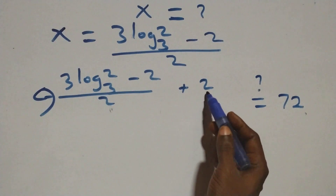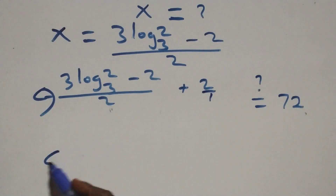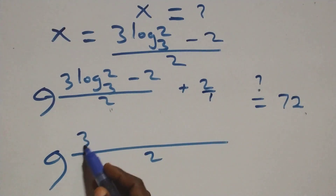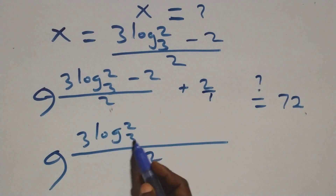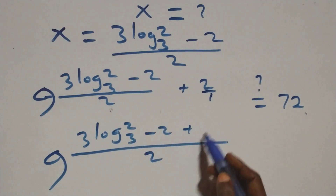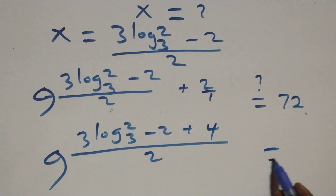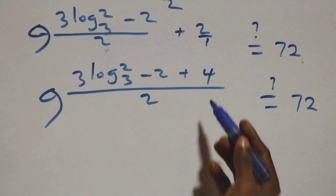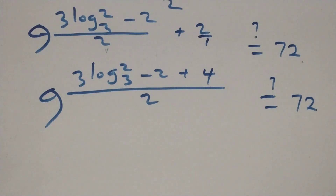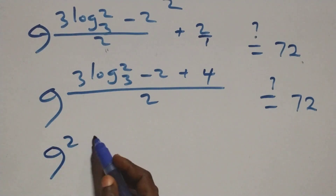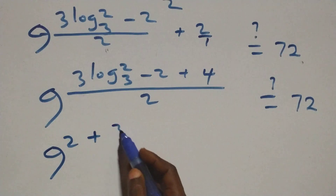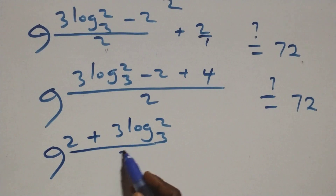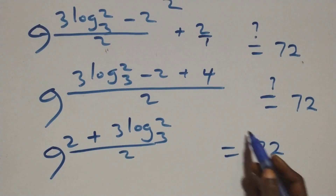We bring this power together as one. We have 9 raised to power: three log 2 base 3 minus 2, plus 4 — is it equals 72? Then 4 minus 2 is 2, and we have 9 raised to power (2 plus three log 2 base 3), all over 2 — is it equals 72 on this side?